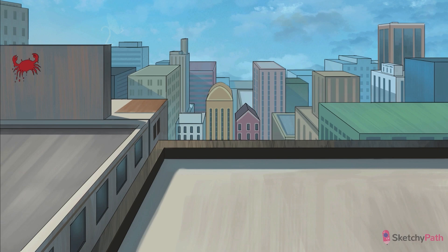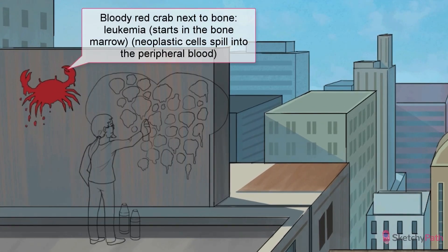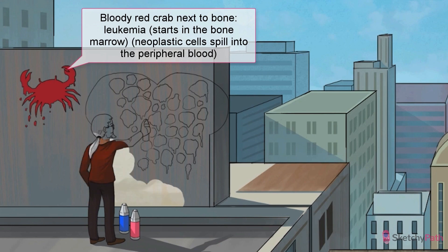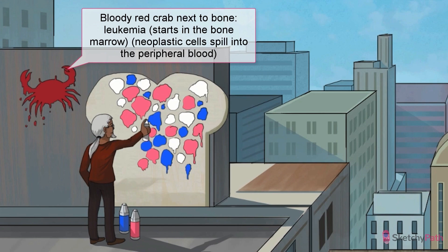In this sketch, the theme is myeloid leukemia, both acute and chronic. Notice that we have a sanguineous-looking crab plastered on the wall — that's just to remind you that we're dealing with leukemias. In other words, we're going to see neoplastic white blood cells out in the circulation. In the setting of acute and chronic myeloid leukemia, however, this isn't where the cancer started. To figure that out, we need to head to the bone marrow.